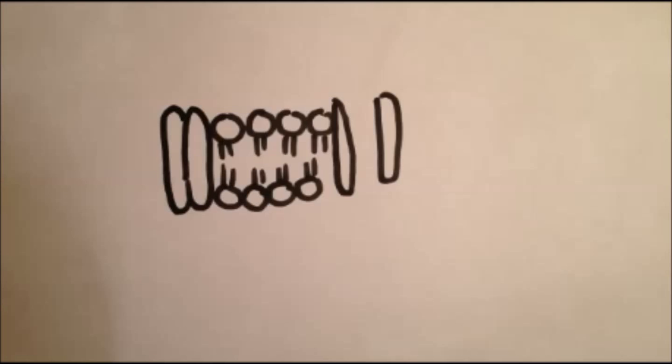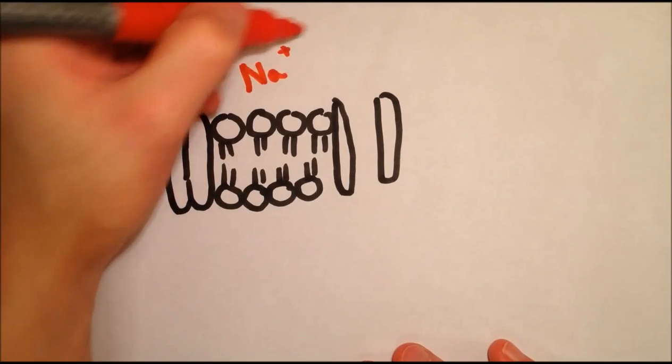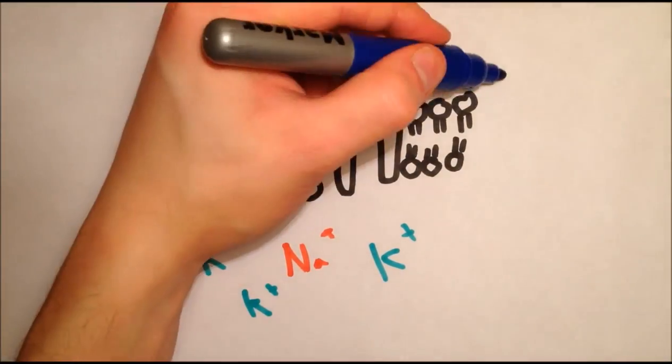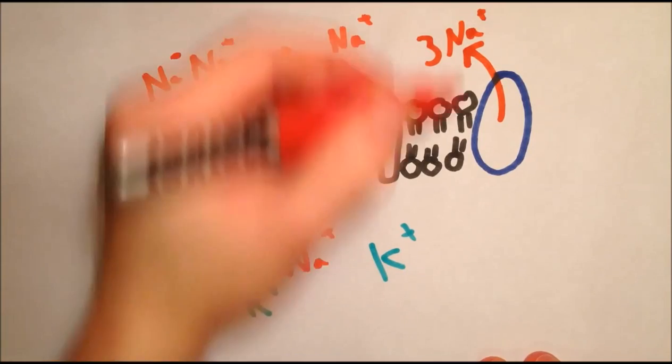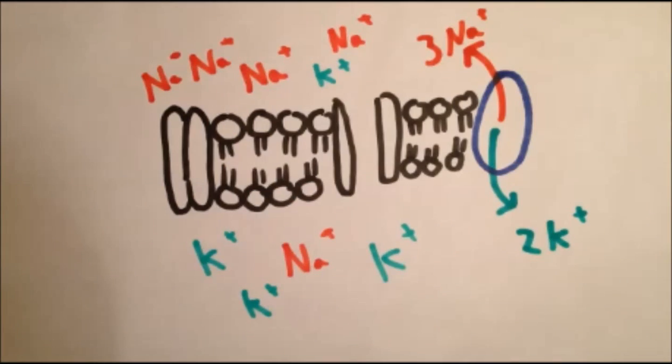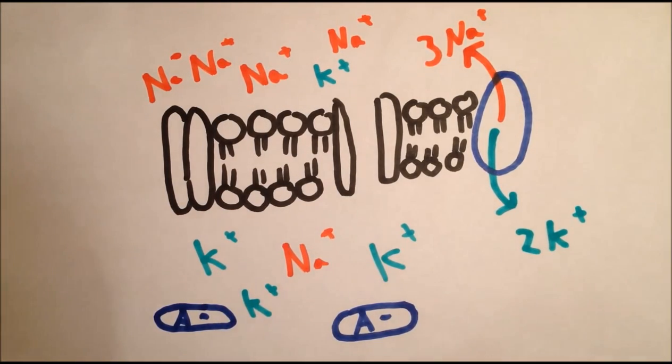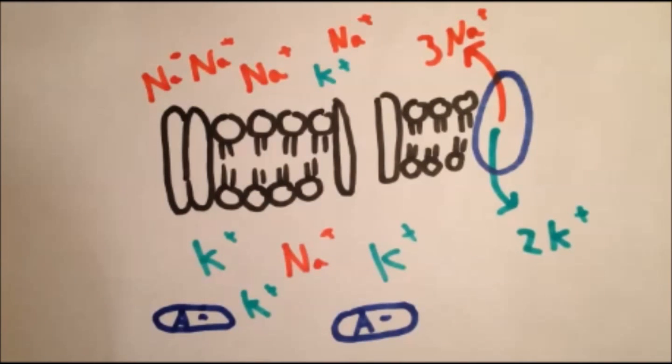The two most important ions in this process are sodium Na+ and potassium K+. The cell membrane is dotted with sodium-potassium ATPases, which actively pump three sodium ions out of the cell for two potassium ions in. Also inside the cell are large negative anions which cannot diffuse across the membrane.